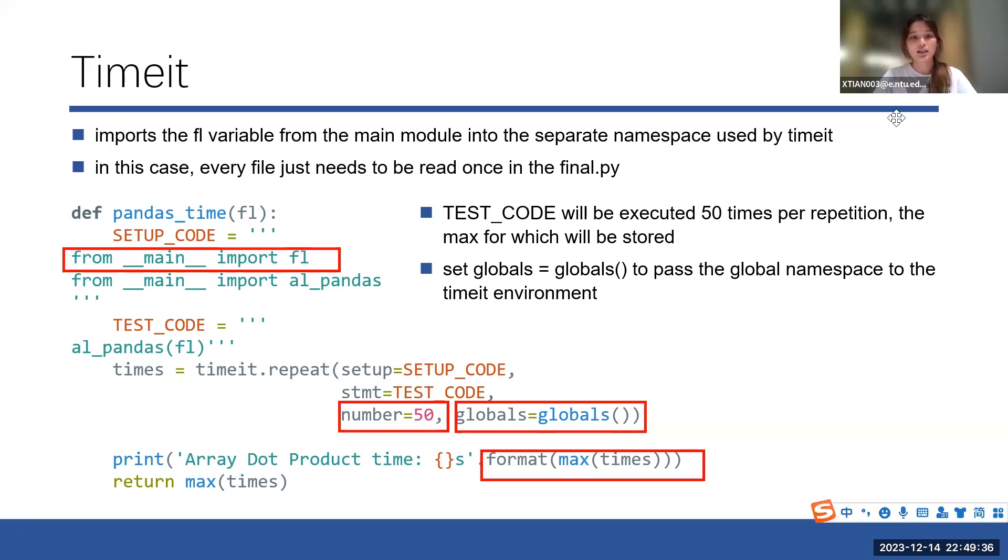And then I set the global variables to pass the global namespace to the timeit environment. These two codes are really corresponding to each other. They are really important, and they need to show up at the same time so that I can make sure that the file just needs to be read once.